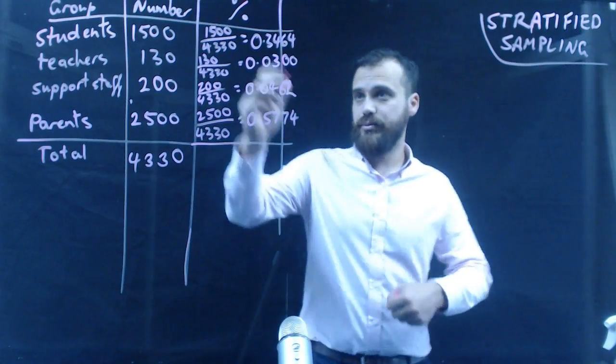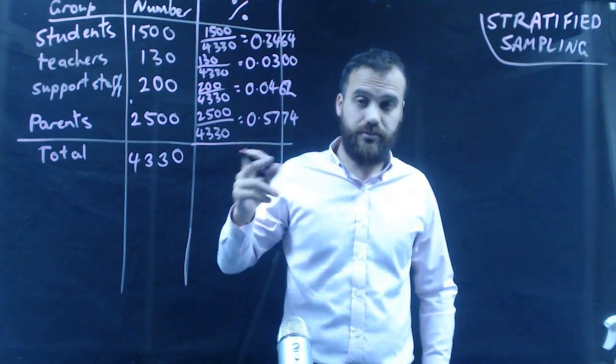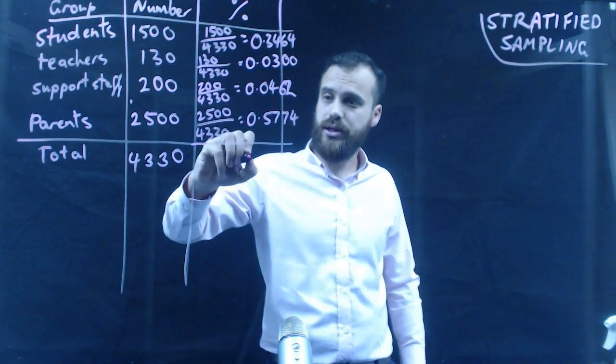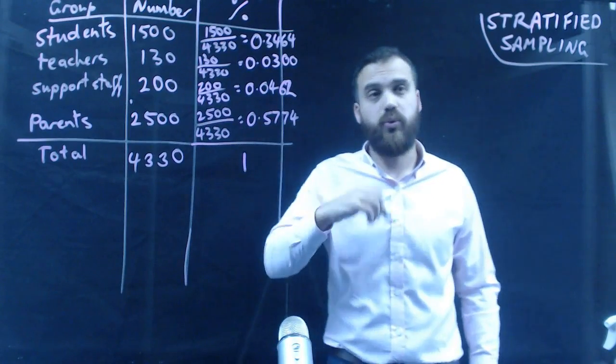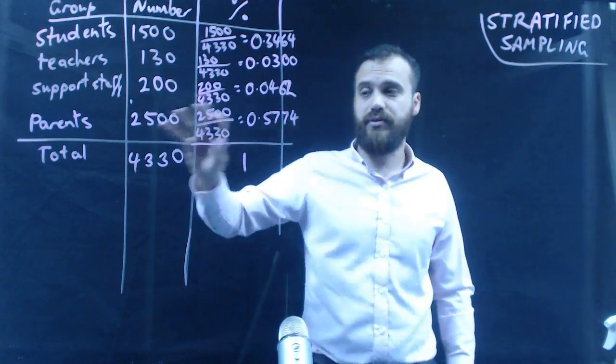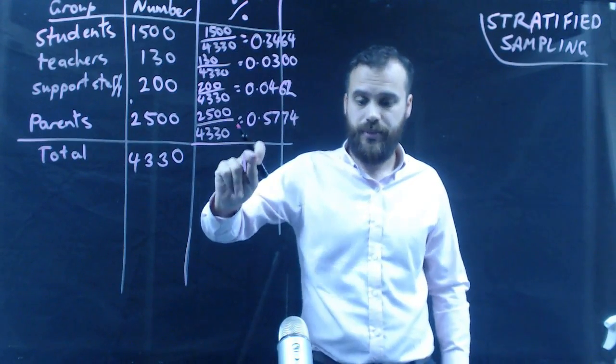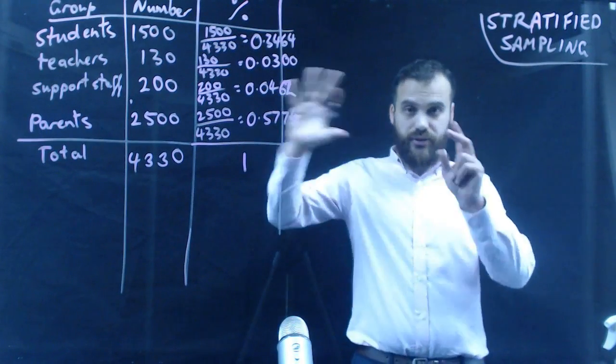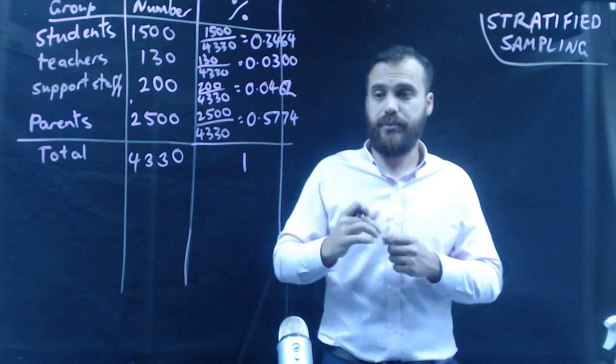Now, if we add up those four numbers, not that we have to, but it's good to check, if we add those four numbers up, we're going to get an answer of 1 or 100%. That means that we've covered all of our people in our group. Okay, now that I've done this part of the math, I can come up with my sample.